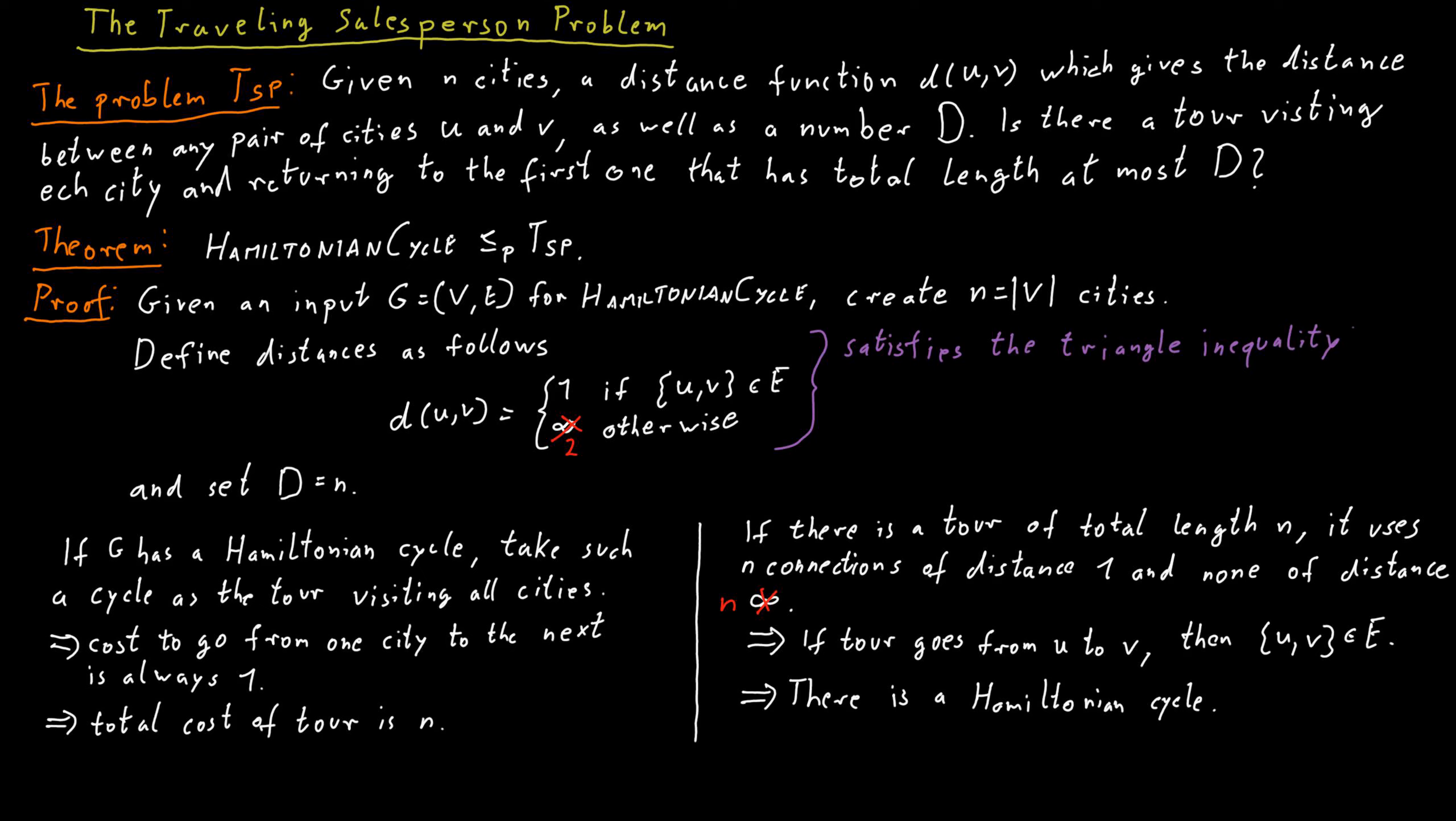The triangle inequality says that if we go from some city u to some city v, then this distance should be no larger than the distance we would get if we take a detour. So the distance between u and v should be no larger than the distance between u and some other city w, and the distance between w and v. If the distances you use are only distance 1 and 2, then automatically what you construct satisfies this very natural triangle inequality.